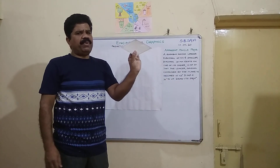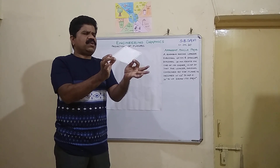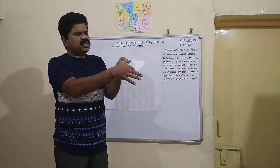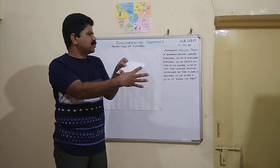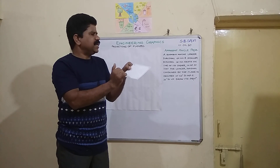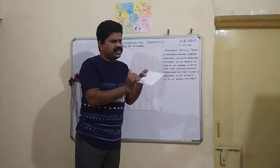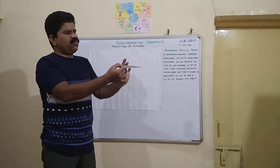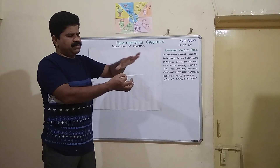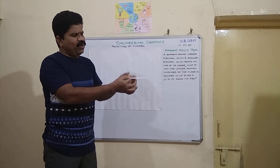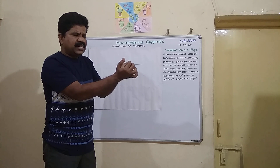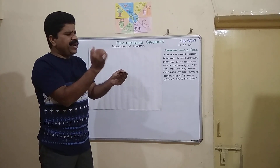This is a rhombus. When seen from the top direction, the true shape of the rhombus will be developed on the horizontal plane HP, and the front view will be developed as a line view, or edge view, directly on XY.